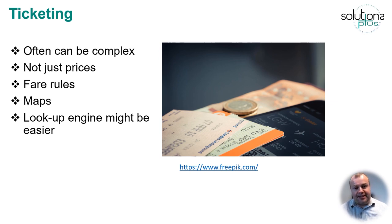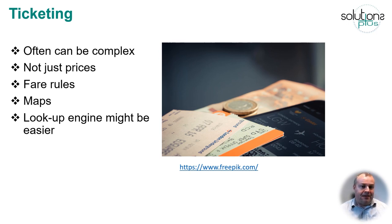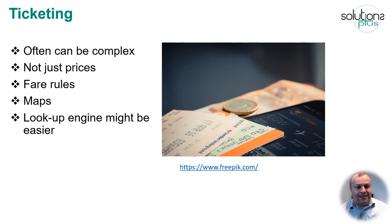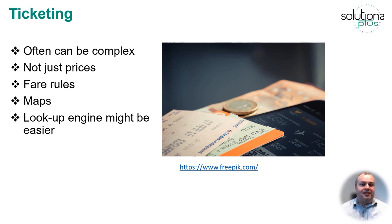Another complex area of digital information is ticketing, and this is something even most authorities with open data systems are struggling to provide. The challenge is that ticketing can be complex — firstly you need to understand the prices, but then there are all the fare rules, such as discounts for students or the elderly, or restrictions like not being able to use a ticket before 9am. If you have fare zones or fare routes, you need the associated maps. One way of making this simpler for third parties is to have a lookup system — you don't share the underlying data, but provide a mechanism where someone can query the cost between point A and B for a given customer type.